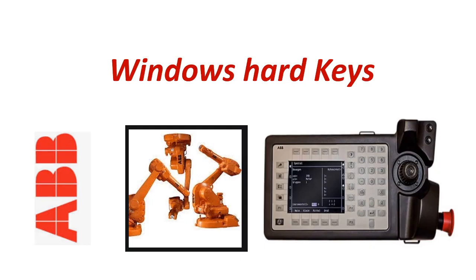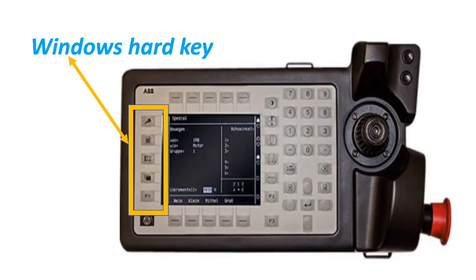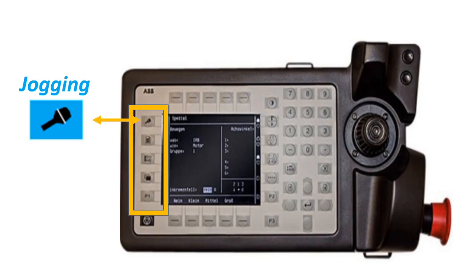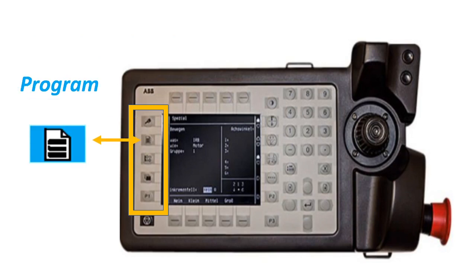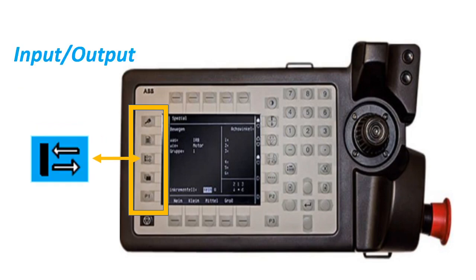Our next topic is Windows Hard Keys. Jogging: press this key to jog the robot. Program: press this key to access programming and testing the program. Inputs and Outputs: press this key to manually operate the input and output.